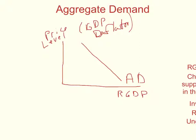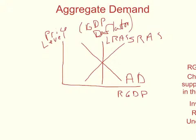We're going to be looking at how the AD curve shifts out or shifts in. We also have a short-run aggregate supply curve that is upward sloping. But more importantly, we have a vertical long-run aggregate supply curve. Long-run aggregate supply is vertical. We will talk about long-run and short-run aggregate supply a little bit later.